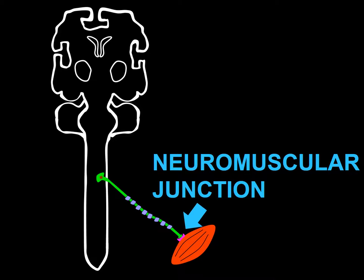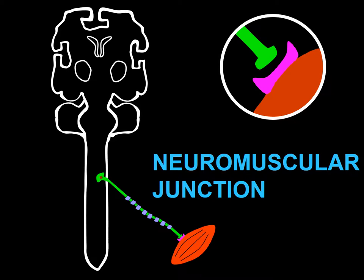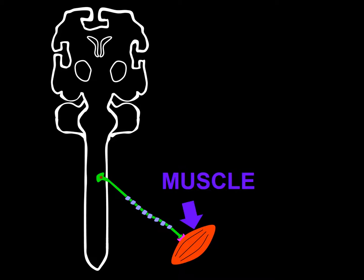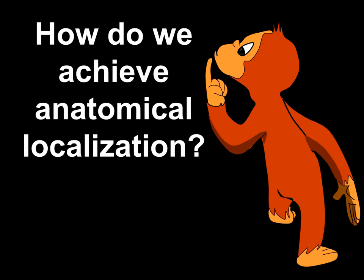Another area of possible involvement is the neuromuscular junction. At the neuromuscular junction, the site involved may be the presynaptic region — which belongs to the nerve and releases acetylcholine — or the postsynaptic region, which belongs to the muscle. The postsynaptic region has nicotinic receptors in somatic muscles and muscarinic receptors in sympathetic and parasympathetic muscles. Finally, a neurological functional system may be involved at the level of the muscle, which may be striated, smooth, or both.